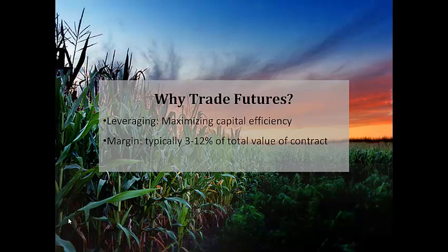For example, at current prices of about 750 cents per bushel for December 2012 corn, one contract of 5,000 bushels costs about $37,500. The initial margin required for the contract is about $1,700 — that's merely 4.5% of the value of one corn contract. If the contract rises by 10 cents per bushel, that will return a profit of $500 with an initial capital outlay of only $1,700, which is almost a 30% return. However, bear in mind that leverage is a double-edged sword and can also amplify losses.